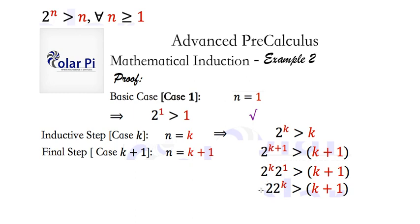But wait, we know how to interpret 2 times 2 to the k. 2 times 2 to the k means 2 to the k plus 2 to the k. And then we recall that in the inductive step, we said that 2 to the k is greater than k. So this 2 to the k is greater than that k. And this 2 to the k is greater than that k. So 2 to the k plus 2 to the k is greater than k plus k.